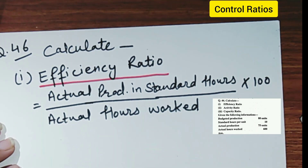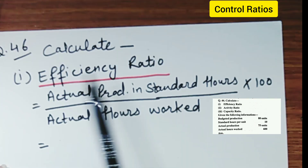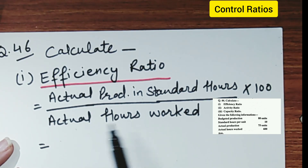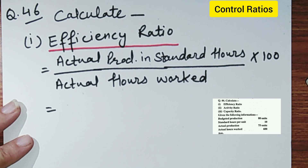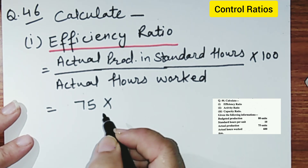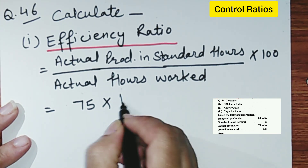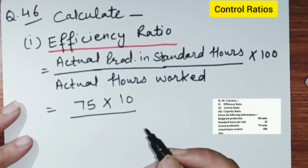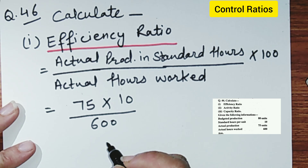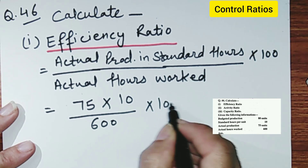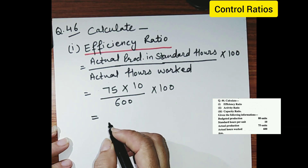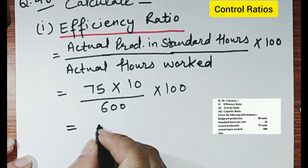From the question, actual production is 75 and standard hours is 10, so 75 multiplied by 10, upon actual hours worked which is 600, multiplied by 100. Solving that gives 125%, which is our efficiency ratio.